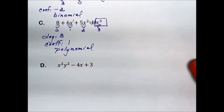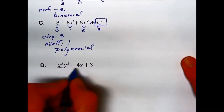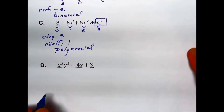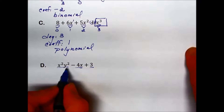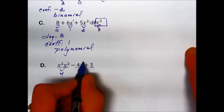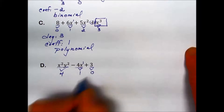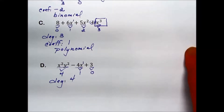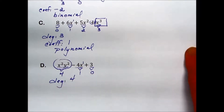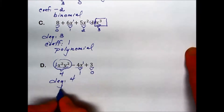One more example identifying the different components. There are 1, 2, 3 terms, and terms are separated by addition or subtraction. The degree of the first term has x squared and y squared, so the degree is 4. The next term has x to the first, so its degree is 1. The last has degree 0. The overall degree is 4. The leading term has the highest power. Its coefficient is implied to be 1. There are 3 terms, so we would call this a trinomial.